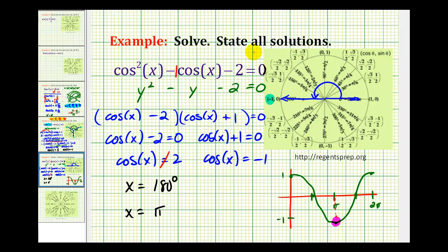But remember this question asks us to state all solutions, not just on a specified interval. So any angle that's coterminal to 180 degrees would also be a solution. Which means all solutions could be expressed as 180 degrees plus 360 degrees times k, where k is some integer. Meaning k is 0 plus or minus 1 plus or minus 2. Remember 360 degrees represents an additional revolution from 180 degrees. And then if we want all solutions in radians, it would just be pi plus 2 pi times k, since 2 pi radians is equal to 360 degrees.